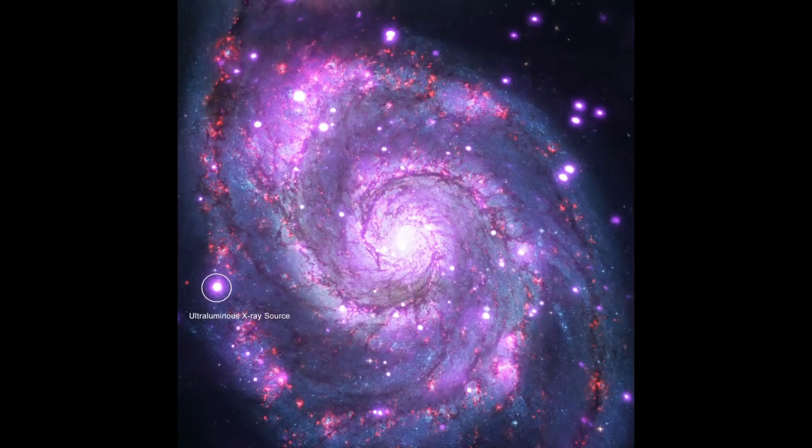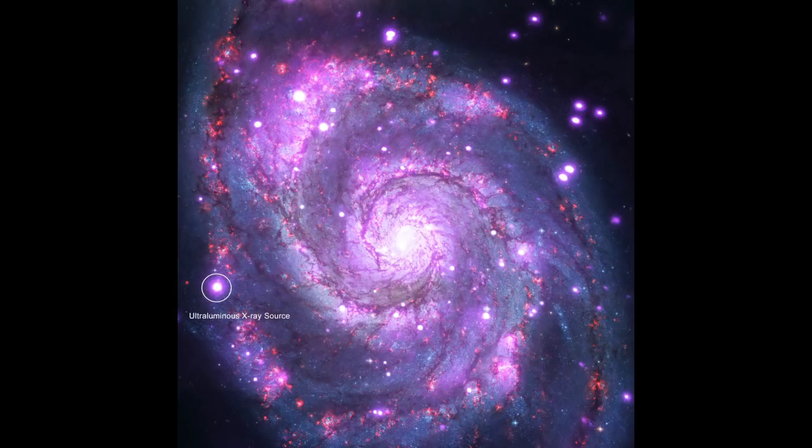Astronomers have confirmed neutron stars as one of the sources of ultraluminous X-rays, powerful beams shining with the light of a million suns. The findings reported in the journal Nature Astronomy has gone some way to solving this galactic mystery. Ultraluminous X-rays, or ULXs, were first detected in the 1980s, shining as bright as supermassive black holes.